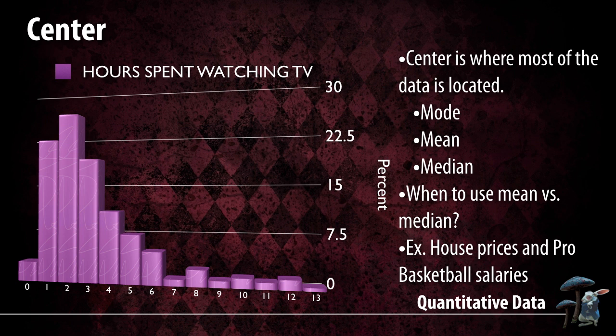A good example is professional athletes. If you take a pro basketball team and look at the salaries, you're going to have one or two superstars getting paid ridiculous amounts — 10 or 15 million dollars — but the average player probably makes less than one million dollars. If you average everything together, it shows the average player makes a couple million dollars a year, which isn't true. Most of them make less than that, because the outlier is causing the mean to go higher.